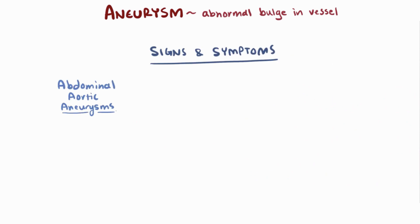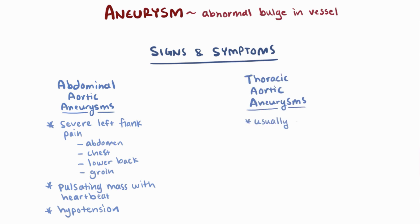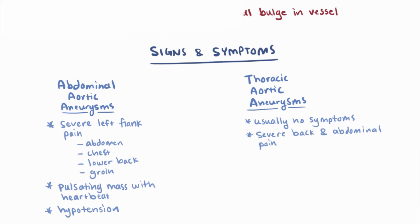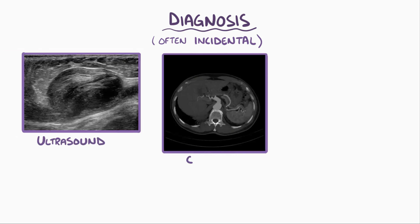Abdominal aortic aneurysms sometimes have signs and symptoms and sometimes don't, even if the aneurysm has ruptured. Severe pain in the left flank — including the abdomen, chest, lower back, and groin — a pulsating mass in time with the heartbeat, and hypotension occur in about 50% of ruptured cases and are considered the classic signs. Thoracic aortic aneurysms usually don't have symptoms, though sometimes they can cause severe chest, back, and abdominal pain. Aneurysms can be asymptomatic and are sometimes diagnosed accidentally during imaging for another reason, typically seen best on ultrasound, CT scan, or MRI.